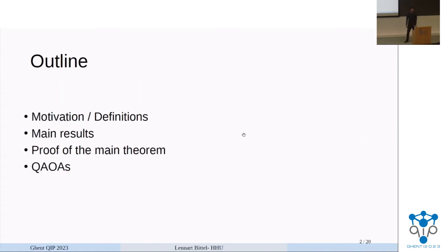So for the outline of my talk, I will quickly motivate why people care about VQAs and also give relevant definitions for our complexity class. Then I will state our main results and finally explain how to prove our main theorem, as well as give a particular example of a QAOA.